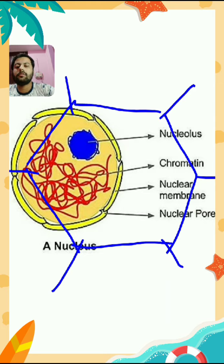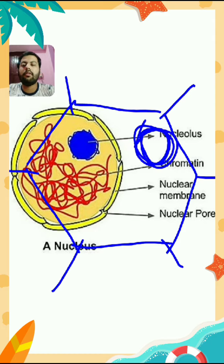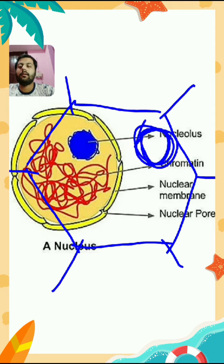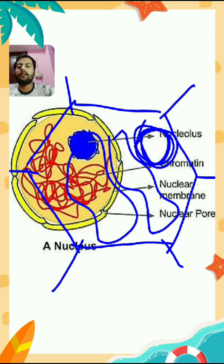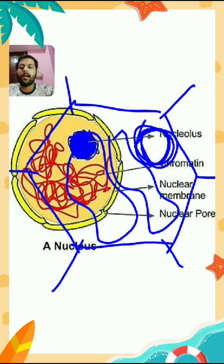But in plant cell, nucleus is located at the corner side. The reason behind that is because in the center of the plant cell, large vacuoles are located. That is why the nucleus is at the corner position inside the plant cell.